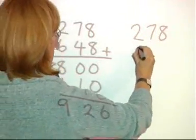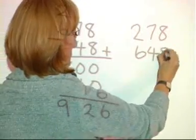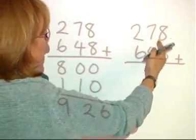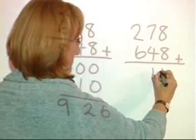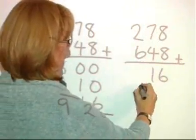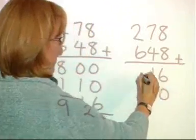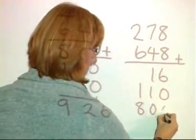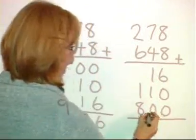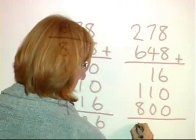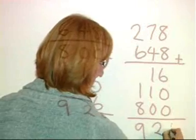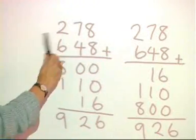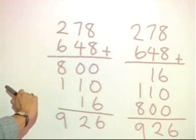So 278 add 648. This time we're going to start with the units. 8 and 8 gives 16. 70 and 40, 110. 200 and 600 gives us 800. Add those all together, you get 926. The same answer as we had when we started with the hundreds.